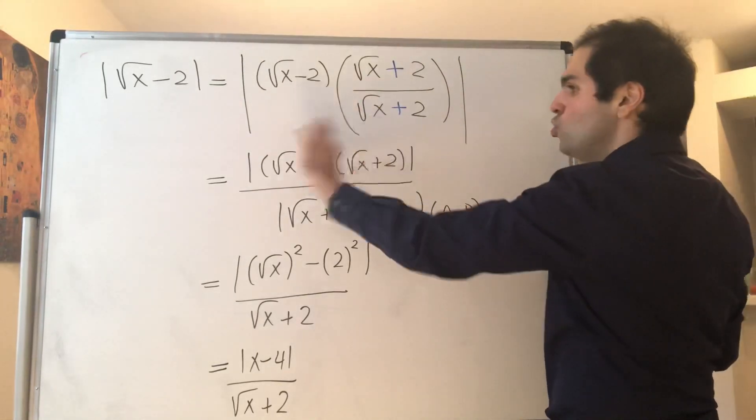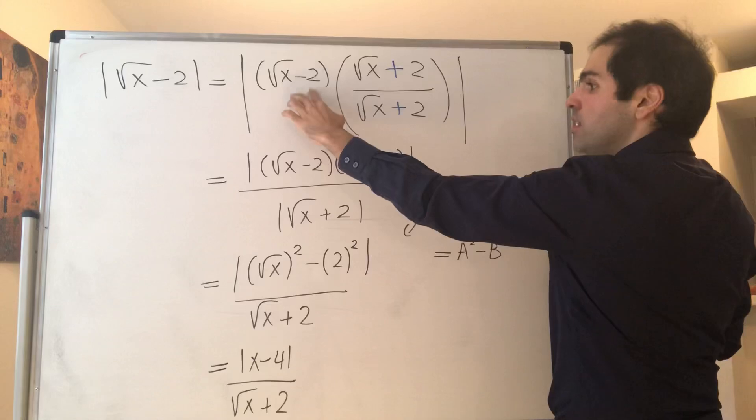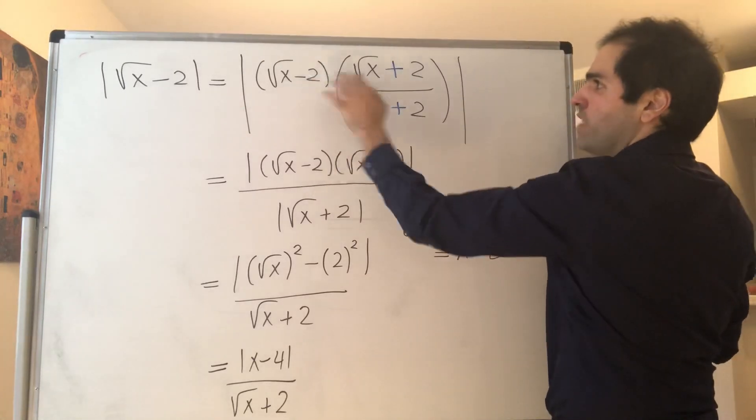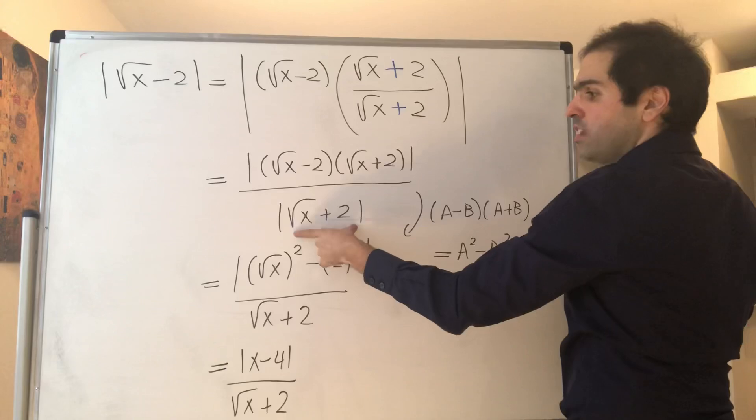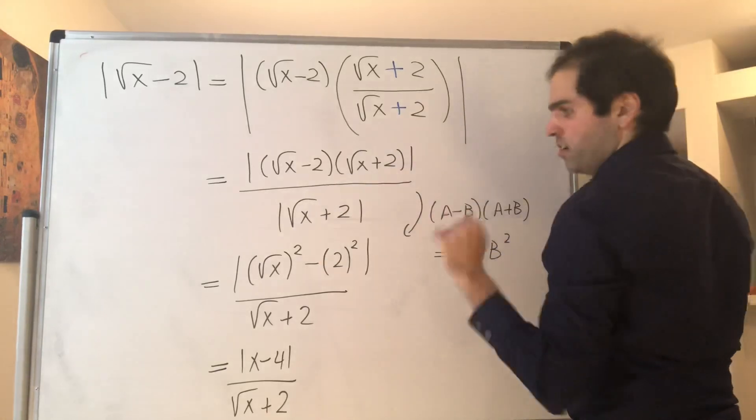And then the numerator, let's just split it up, square root of x minus 2 times square root of x plus 2. And the denominator is just square root of x plus 2.